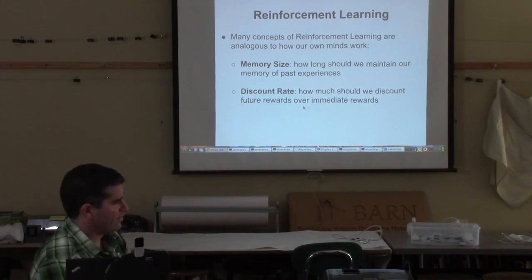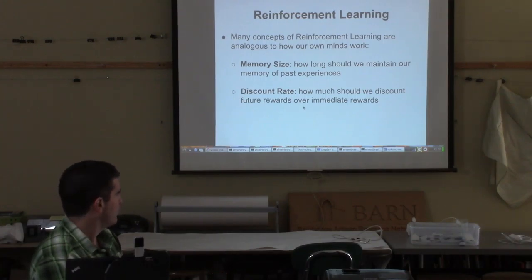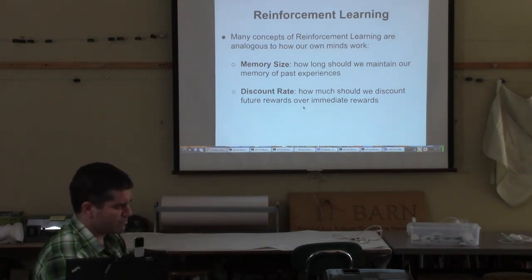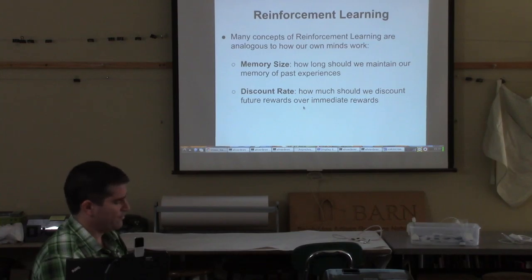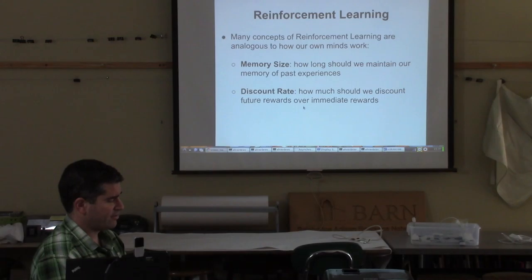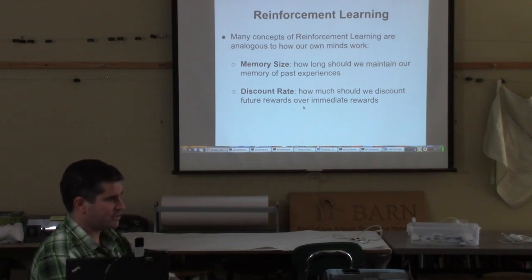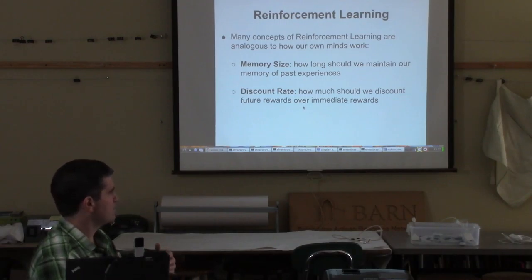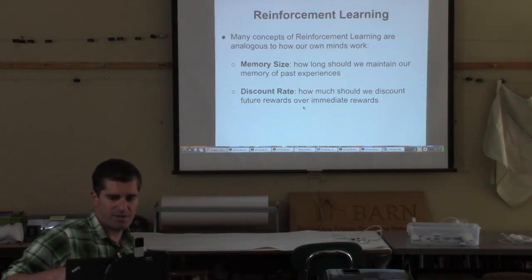Memory size: how far back should you maintain experiences? Because as the machine learns and gets better, those early experiences aren't necessarily going to be useful. That's another parameter you can play with. Then there's discount rate: how much do we prioritize immediate rewards over rewards that happen multiple time steps into the future? If you set the discount rate very aggressively, your computer is basically a pleasure-seeking hedonist that will try to max out current rewards at the expense of anything in the future. On the other extreme, your computer might treat something that happens way down the road equally with what happens right now.